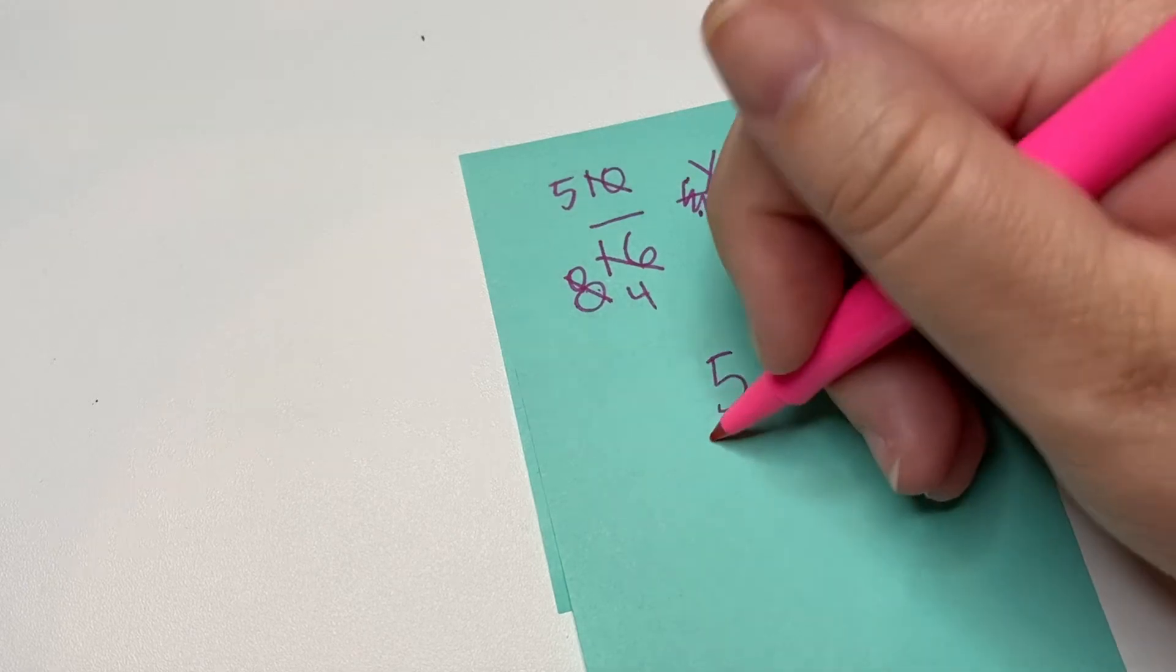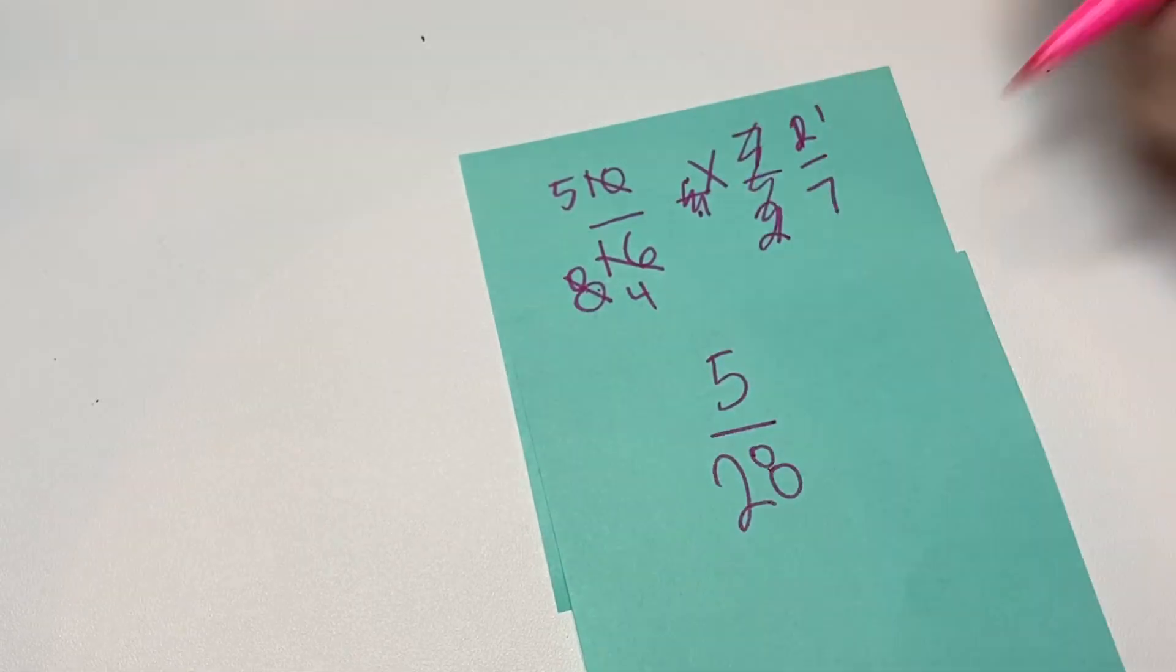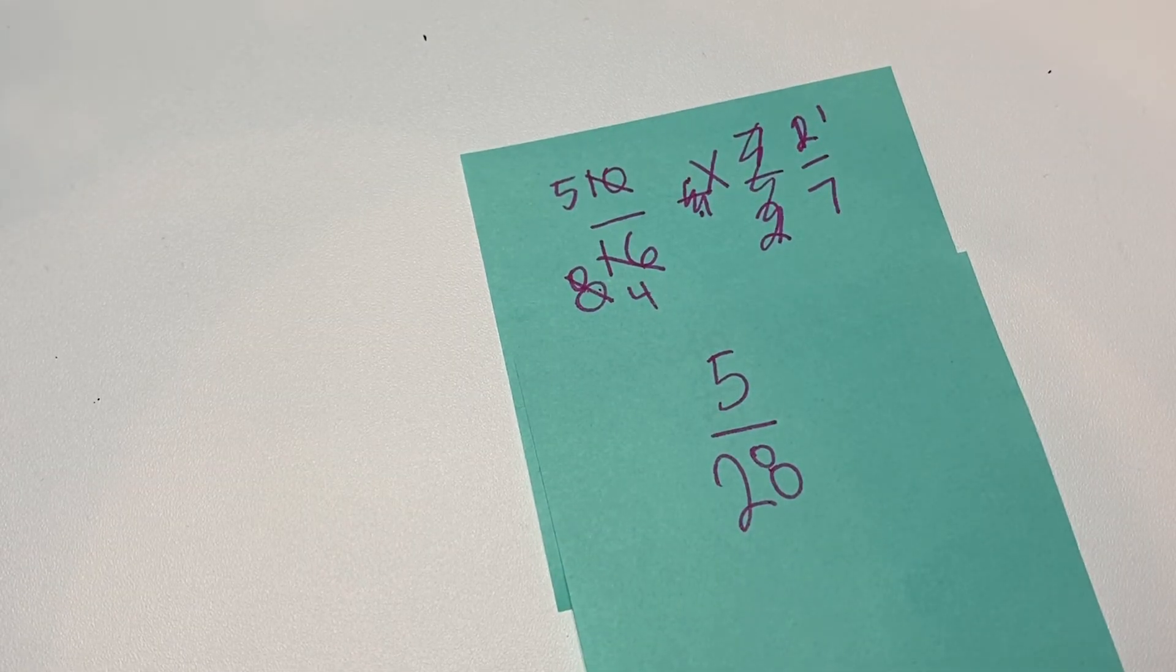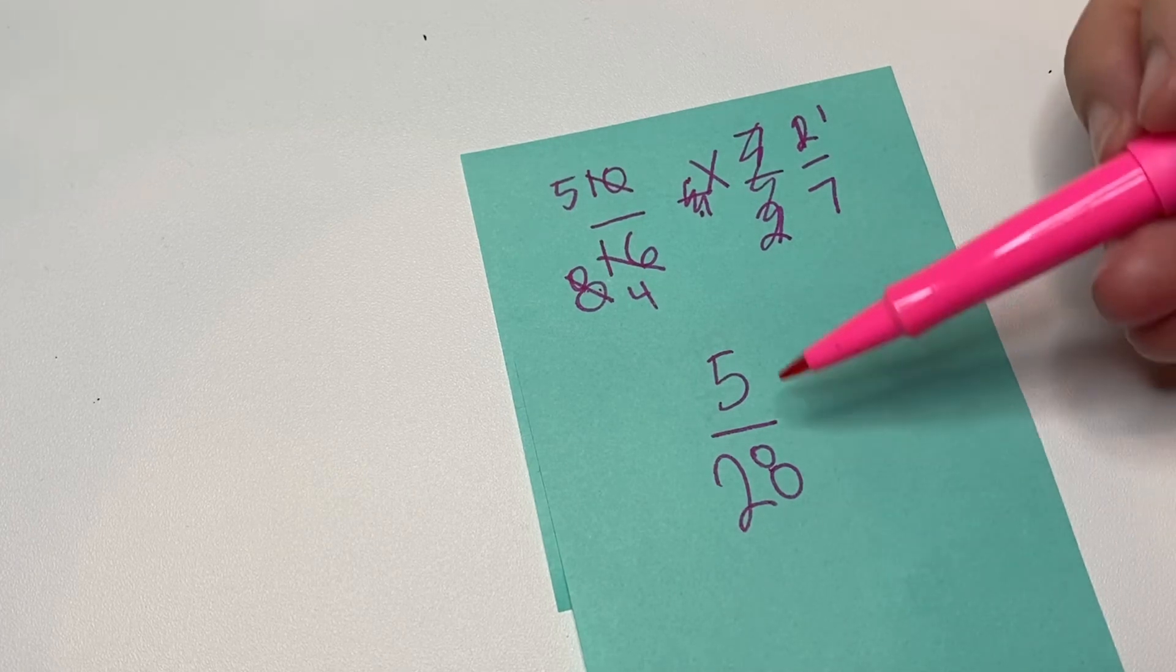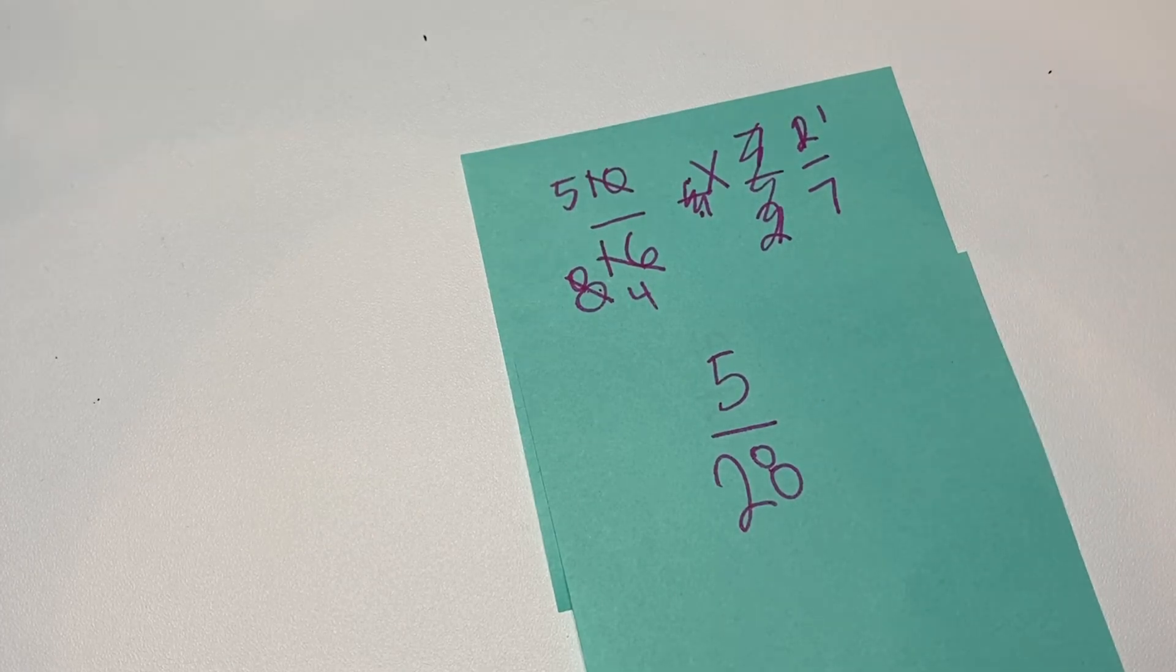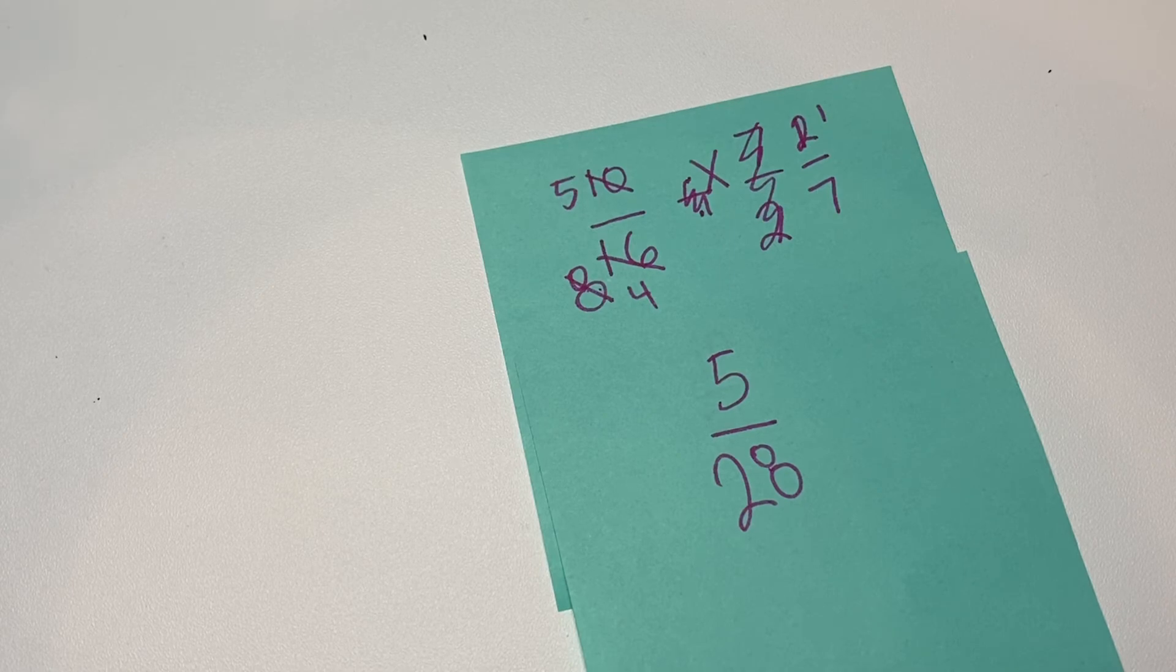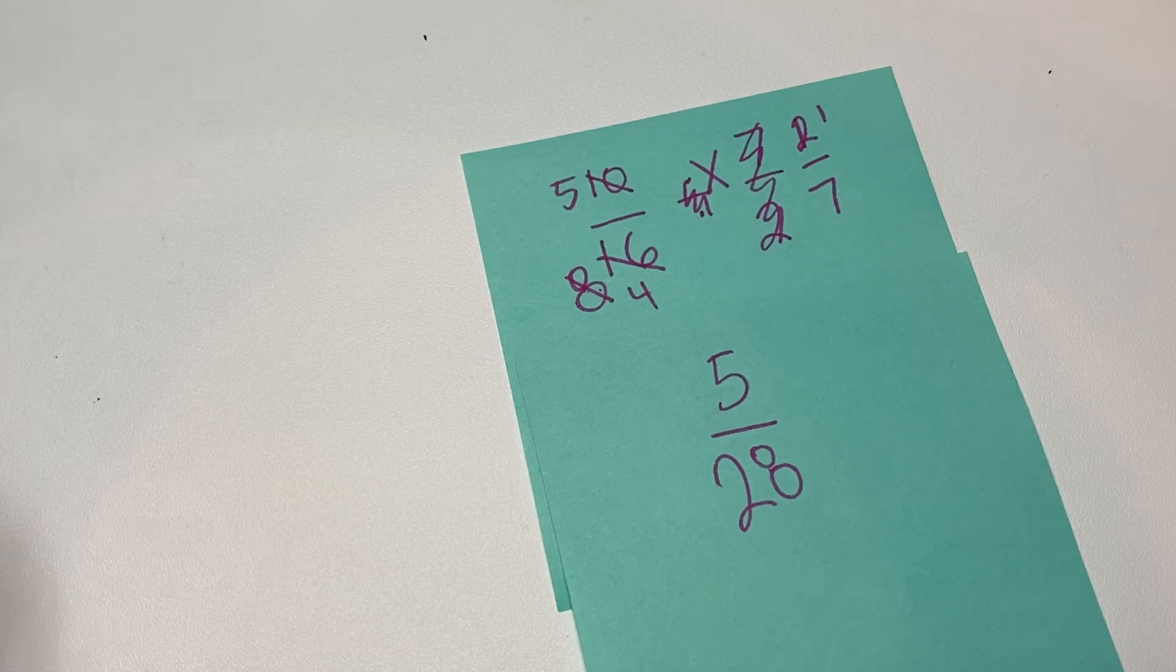So now we can see this is a simplified fraction. They don't have any common factor between the five and the twenty-eight. So yeah, that is how you cross-cancel.